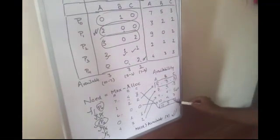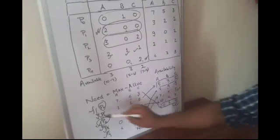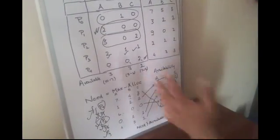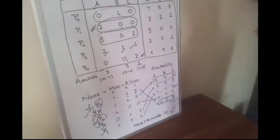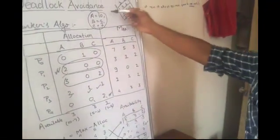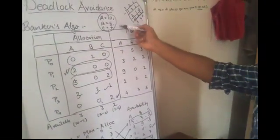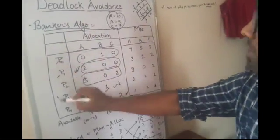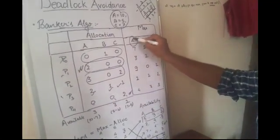One thing we have to keep in mind is that the max matrix is the maximum resources each process can have. These are the total instances: 10 for A, 5 for B, 7 for C. So no process can have instances of A more than 10, because the number of A is only 10. We can't have any process which has more than 10. That's quite obvious.